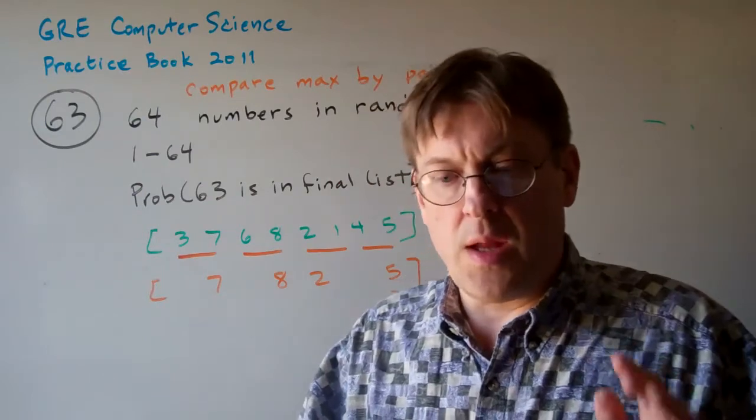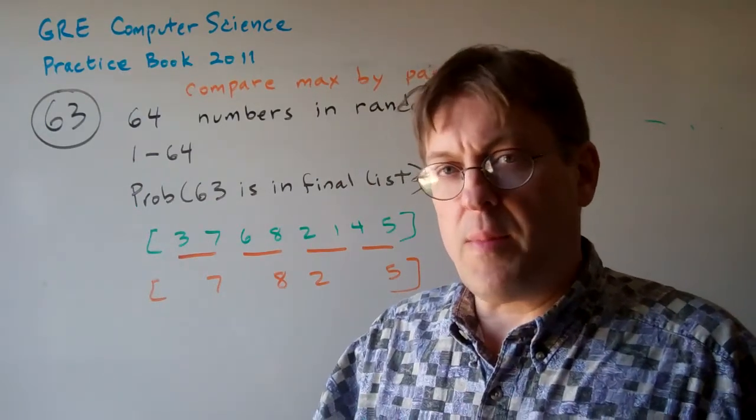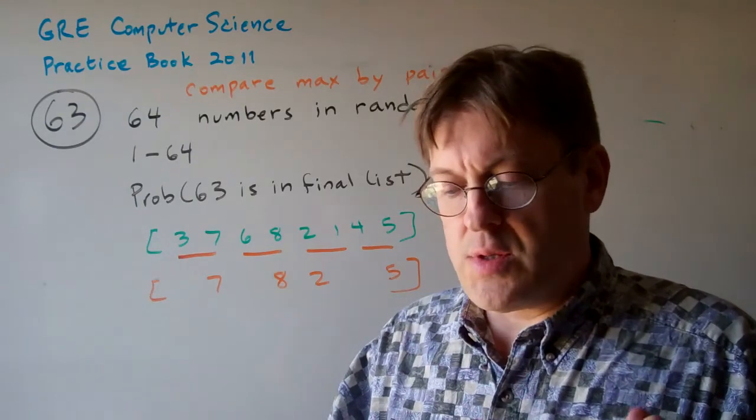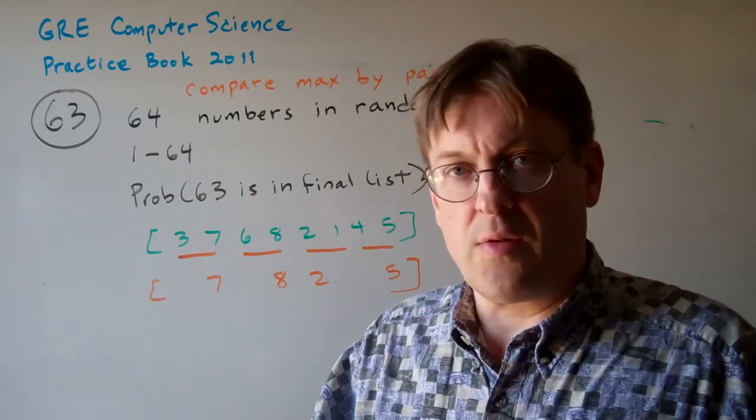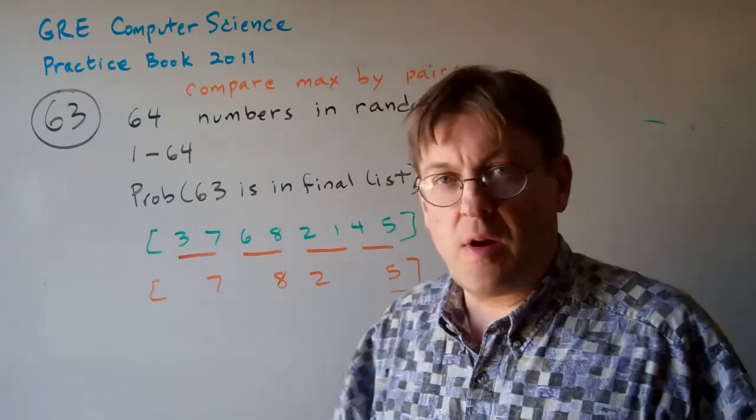Question 63. An algorithm takes a list of numbers and goes pair by pair and chooses the maximum numbers. So it returns a list that's half as long as the list that it started out with.